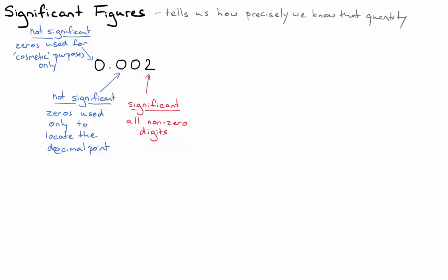Let's say we measured it a little more precisely. Let's say it was 0.0025 meters. In that case, it still falls under this rule. It is significant. It's a non-zero digit.